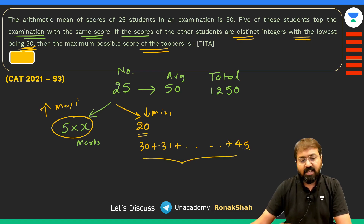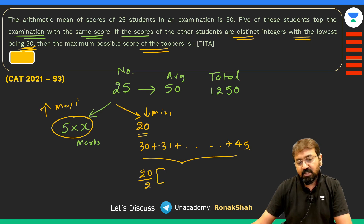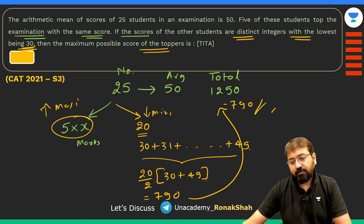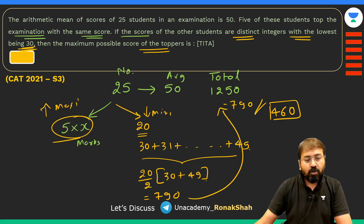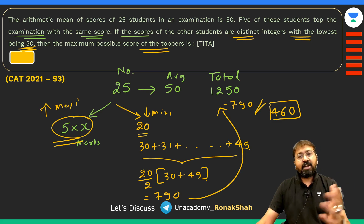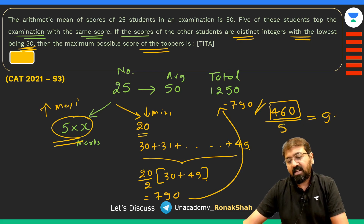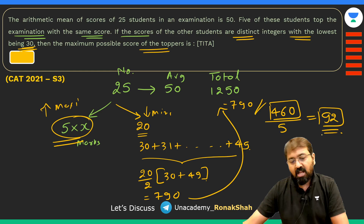The sum of 30 to 49 is calculated using the formula n/2×(first+last) = 20/2×(30+49) = 10×79 = 790. Subtracting from the total: 1250−790 = 460, which is the combined score of the 5 toppers. Maximum possible topper score = 460÷5 = 92.